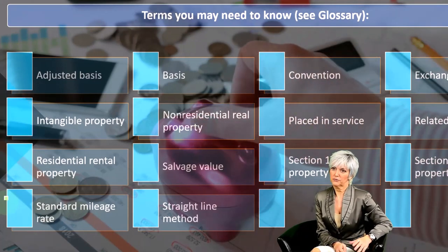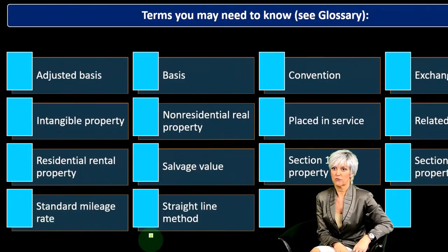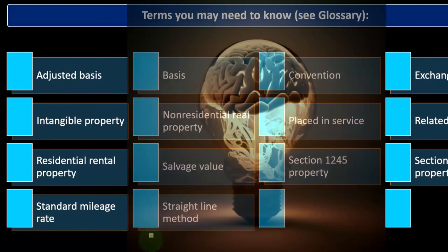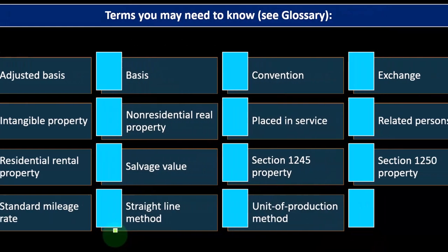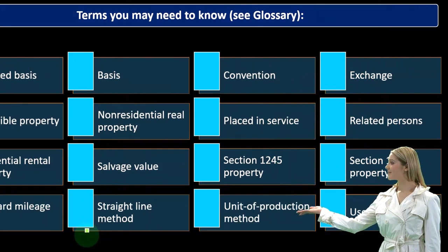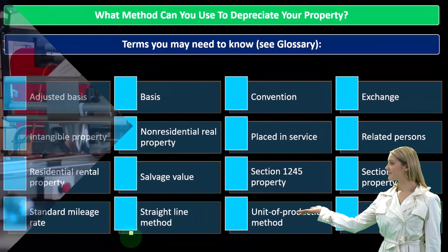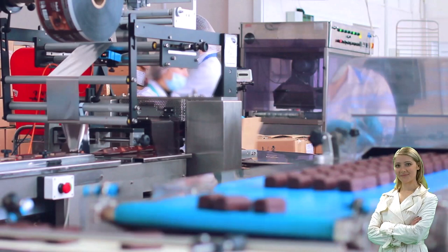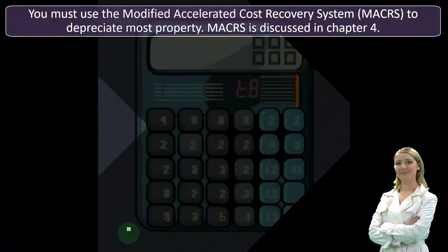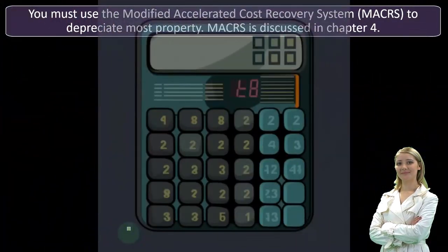Standard mileage rate when talking about automobiles and comparing depreciation methods. Straight-line method is the baseline method — keep that in mind as the ground basis for how depreciation works, and then we deviate from there. Unit of production is another depreciation method. Useful life — how long is this piece of equipment going to be around? Usually we're subject to the tax code telling us how to calculate that.